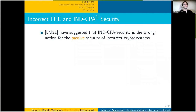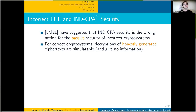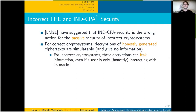Li and Micciancio have suggested that NCPA security is the wrong notion for the passive security of incorrect cryptosystems. For correct cryptosystems, decryptions of honestly-generated ciphertexts are simulatable and therefore give no information to an adversary. For incorrect cryptosystems, these decryptions can leak information, even if the user is only honestly interacting with their oracles.